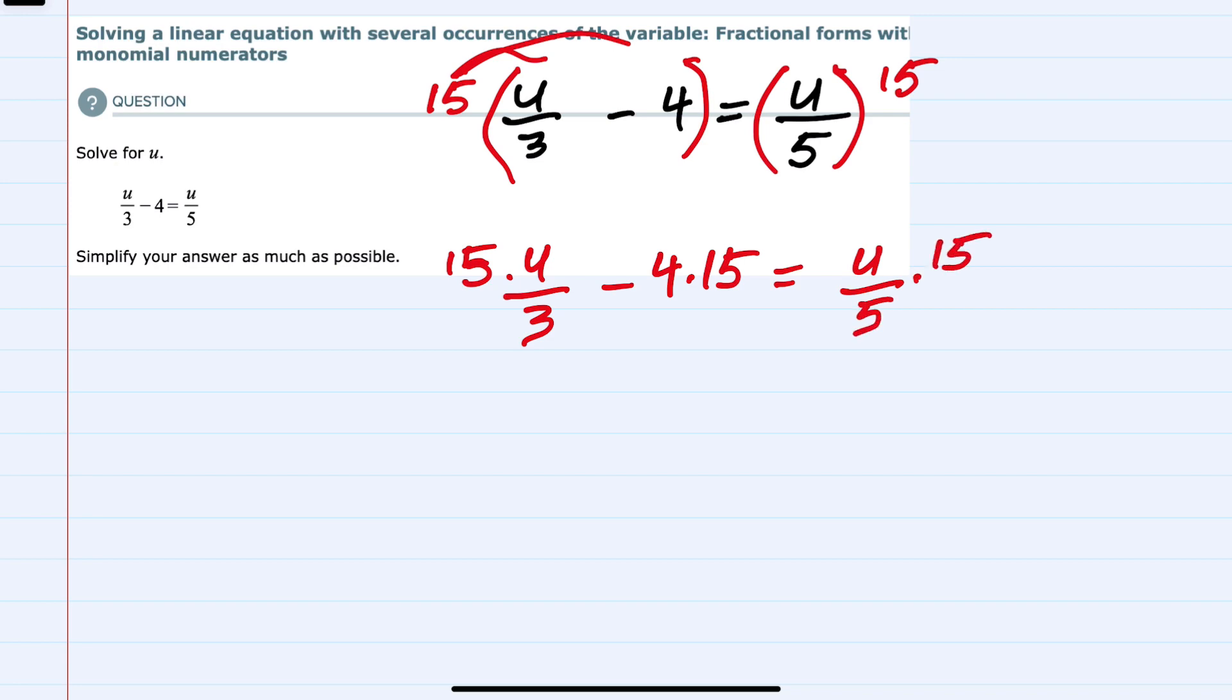I've multiplied each term on the left hand side and the right hand side by our lowest common denominator, 15. That's going to allow us to cancel those denominators. In this first term here, I can cancel the 3 and the 15 because 3 goes into 3 once, and 3 goes into 15 five times.